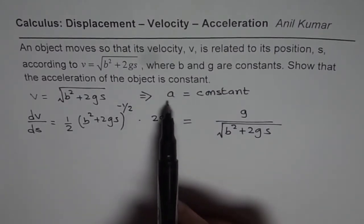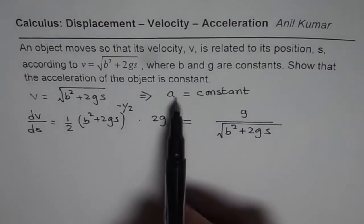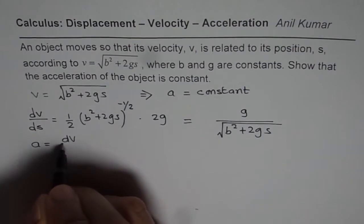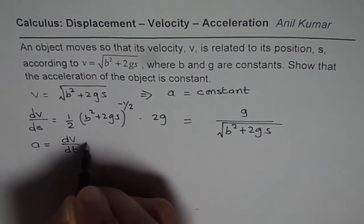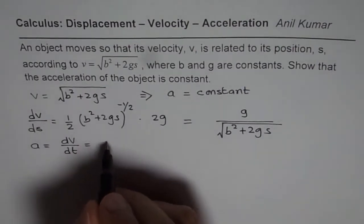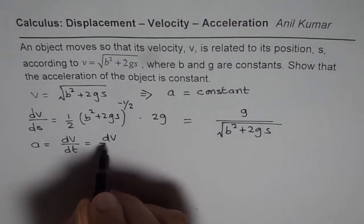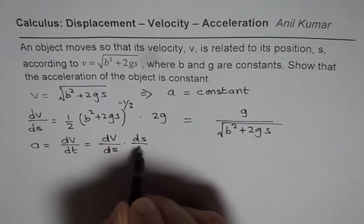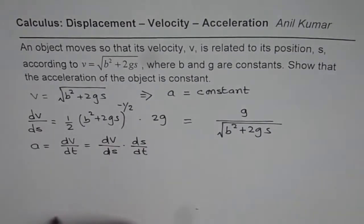Now we need to show that acceleration is constant. After all, what is acceleration? Well, I could write acceleration as rate of change of velocity over time, but here we have displacement, so we can write this as rate of change of velocity with displacement times displacement over time. That is how we could write it.